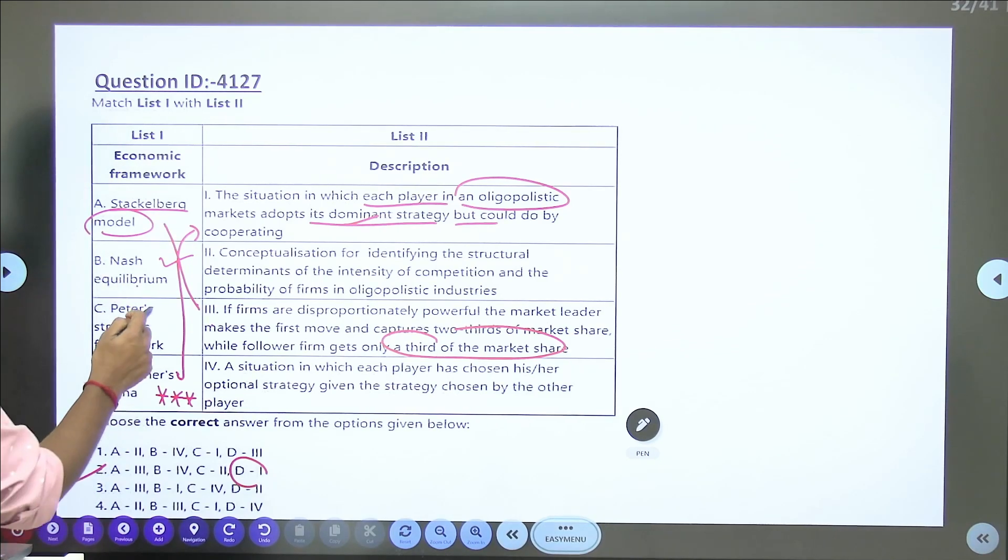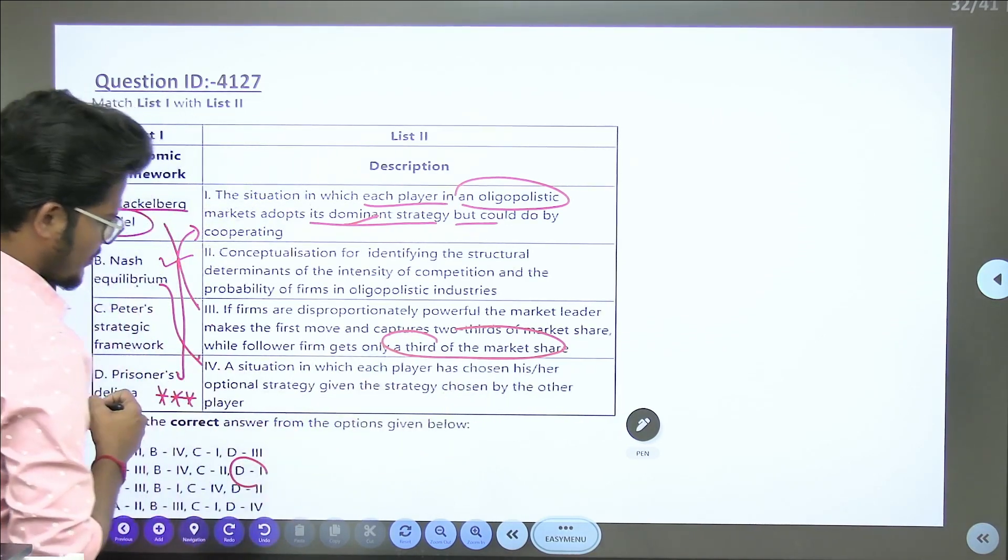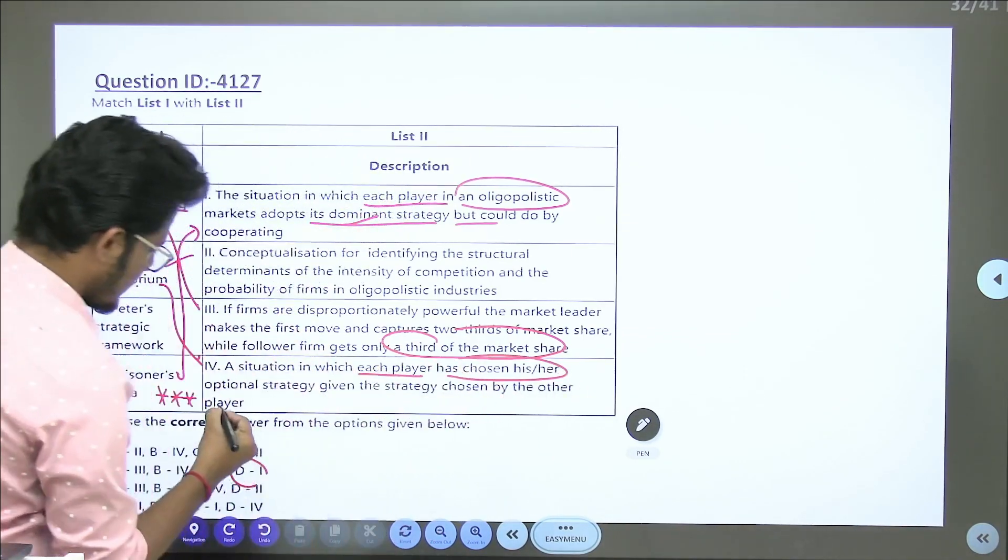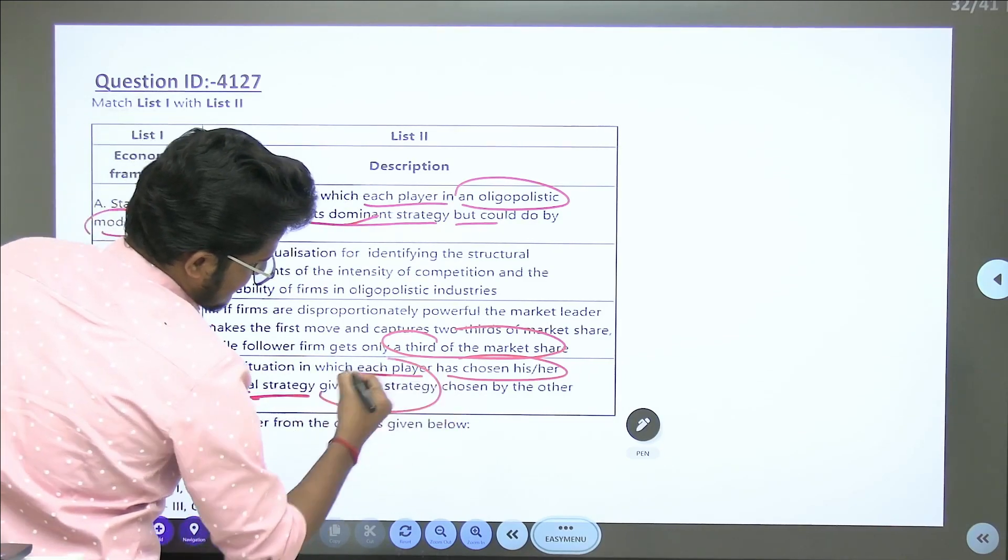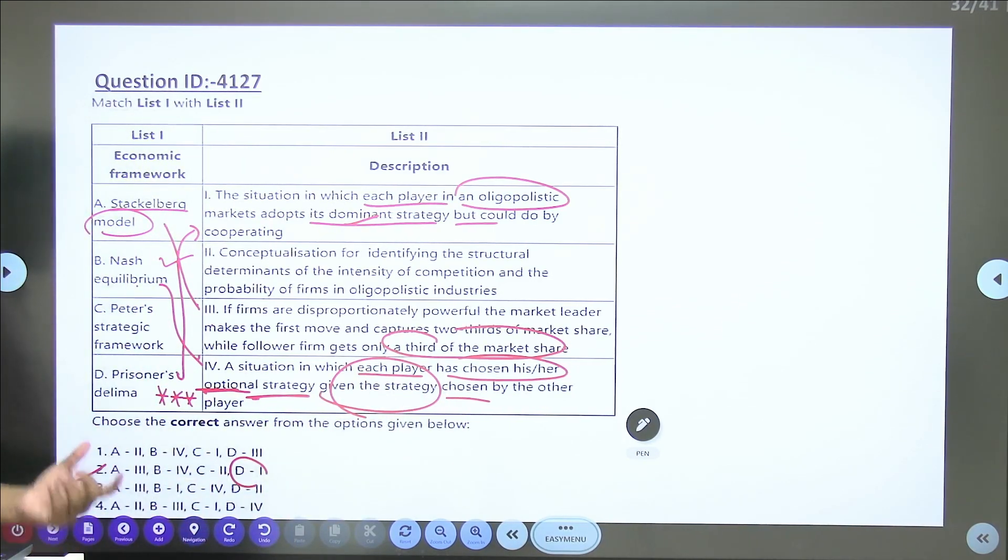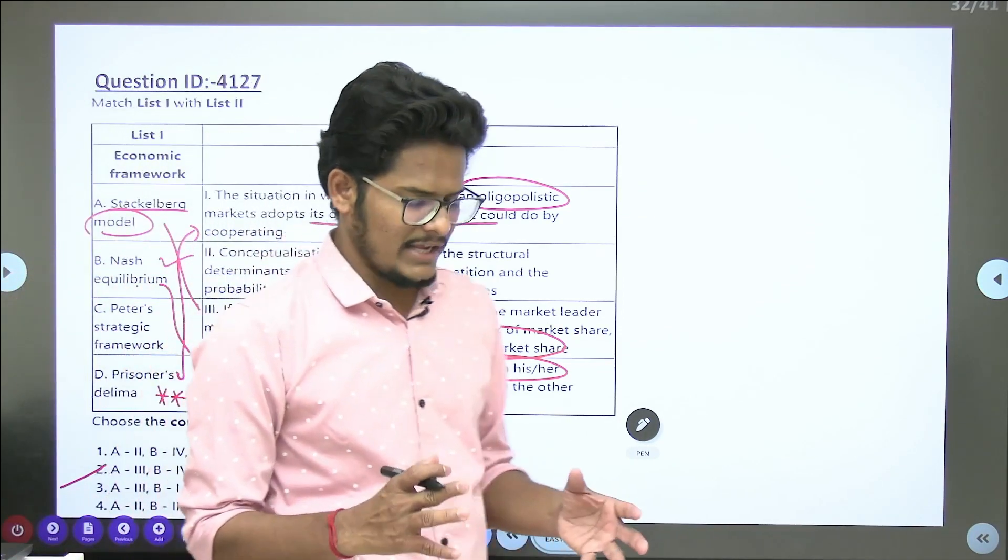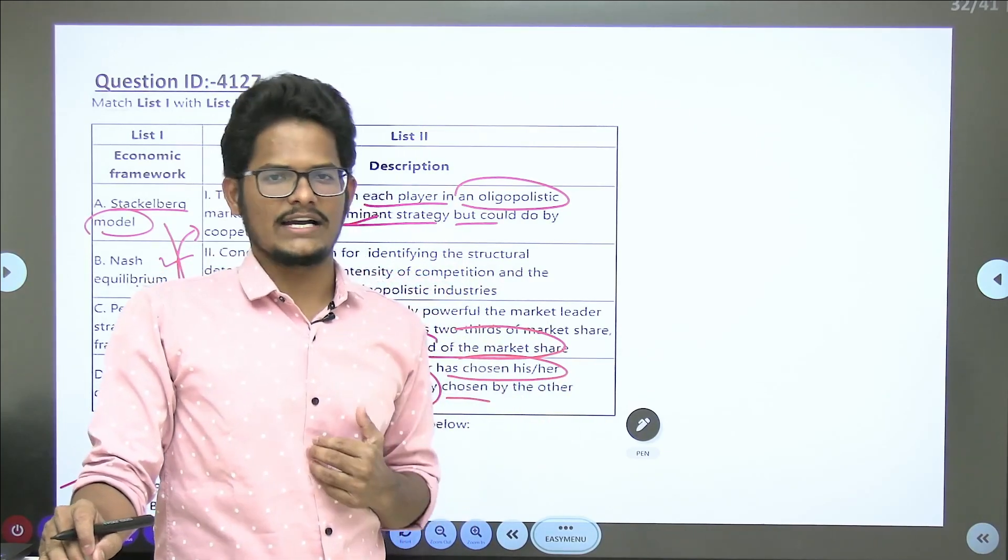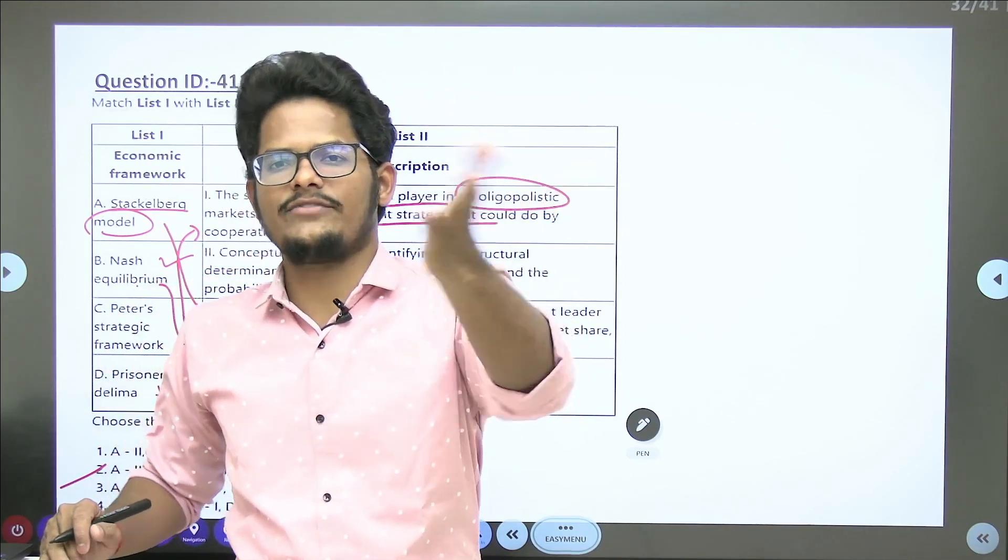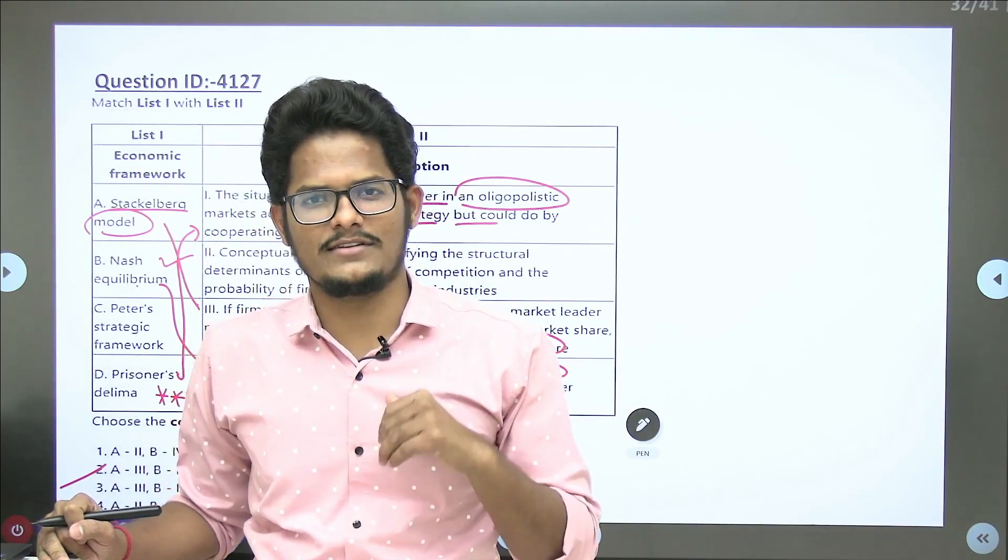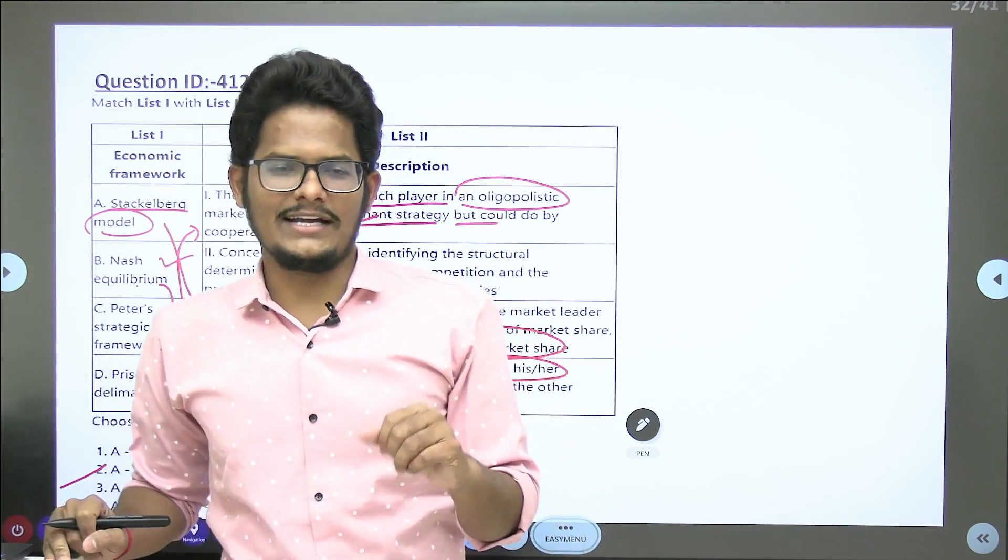Nash Equilibrium: B is fourth one. It's a situation where each player has chosen his or her optimal strategy given the strategy chosen by other players. Every organization in the market has their own strategies, but sometimes I will follow the strategy given by others. Like you may ask the topper what is your strategy in cracking JRF, and you may adopt the same if suitable. That's Nash Equilibrium.